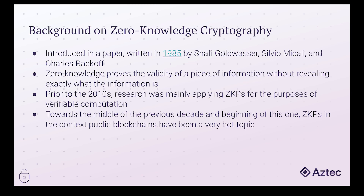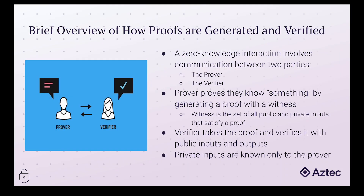If this is interesting to you and you want to learn more of the history, we highly recommend doing your own research — there's much more here than we can touch on in this video. We'll link to some helpful resources in the description. For this video series, all we need to know is that a zero-knowledge interaction involves two parties: a prover and a verifier.